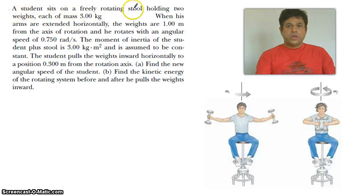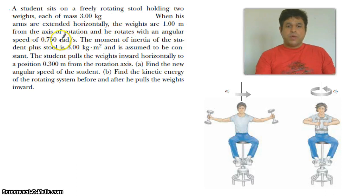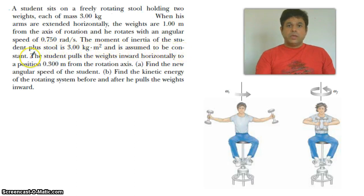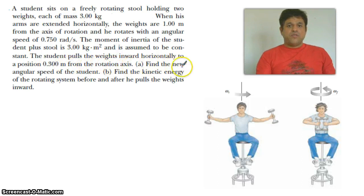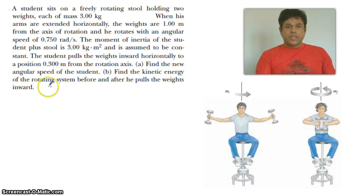A student sits on a freely rotating stool holding two weights, each of mass 3 kg. When his arms are extended horizontally, the weights are 1 m from the axis of rotation and he rotates with an angular speed of 0.750 radian per second. The moment of inertia of the student plus the stool is 3 kg·m² and assumed to be constant. The student pulls the weights inward horizontally to a position 0.30 m from the rotation axis. Find the new angular speed of the student. Find the kinetic energy of rotation before and after he pulls the weights inward.